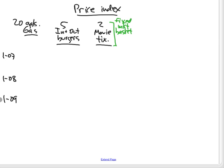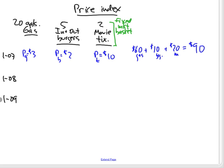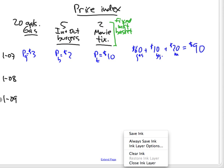Let's say that in January 07, the price of gas is three dollars a gallon, burgers are two dollars each, and movie tickets are ten. So the price of buying all those things in January 07: three times twenty on gas, five times two, ten dollars on burgers, and ten times two, twenty dollars on movies, equals ninety dollars. Your cost of living was ninety dollars in January 07.